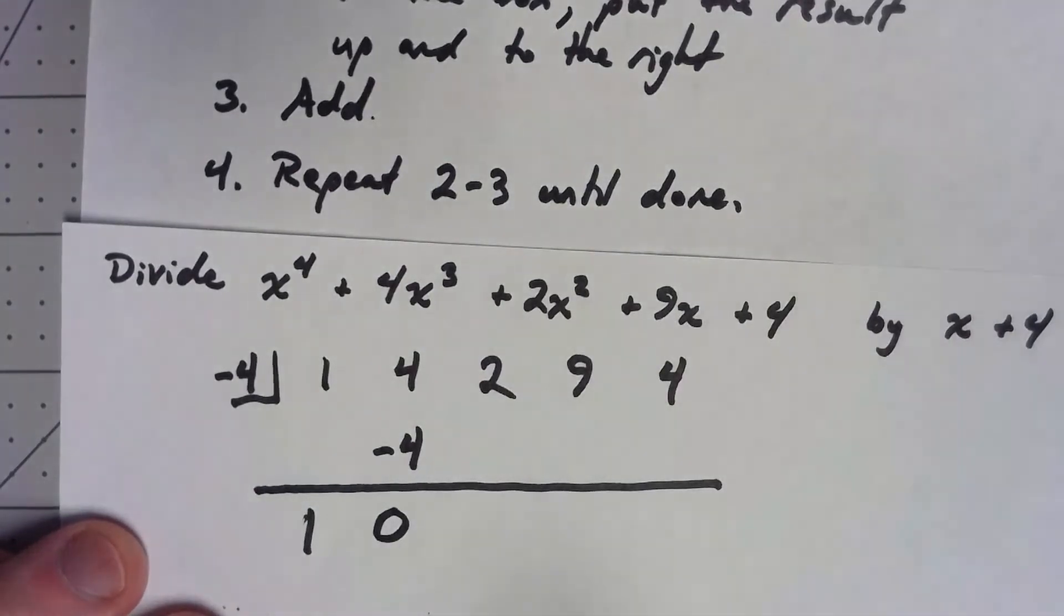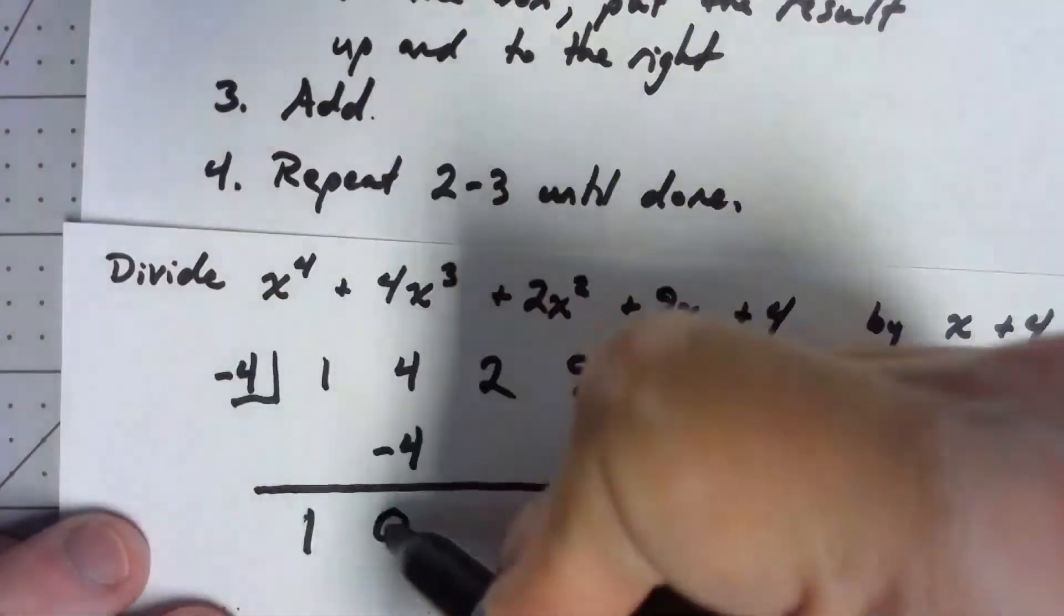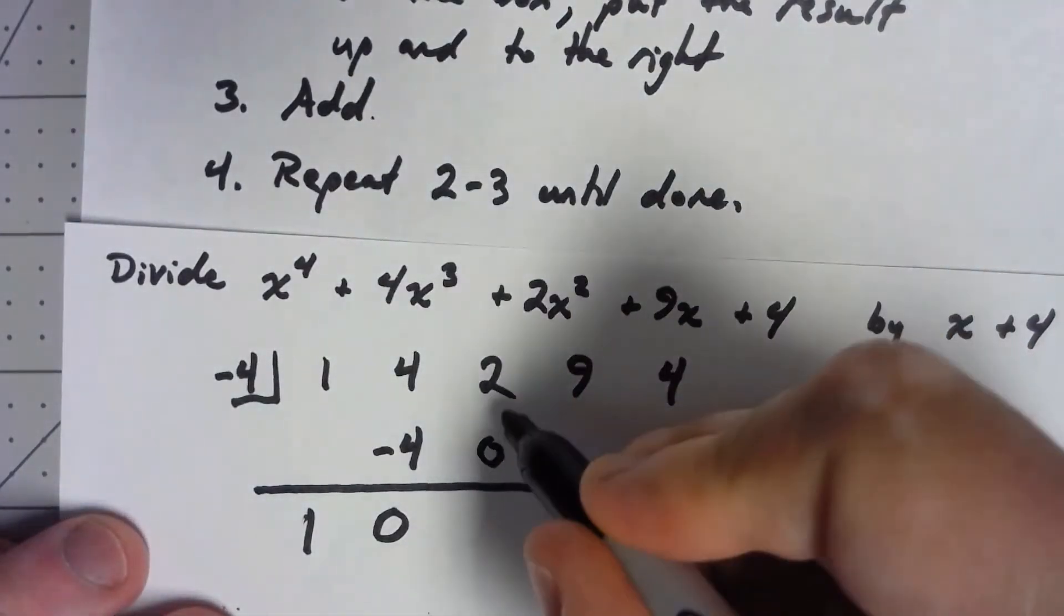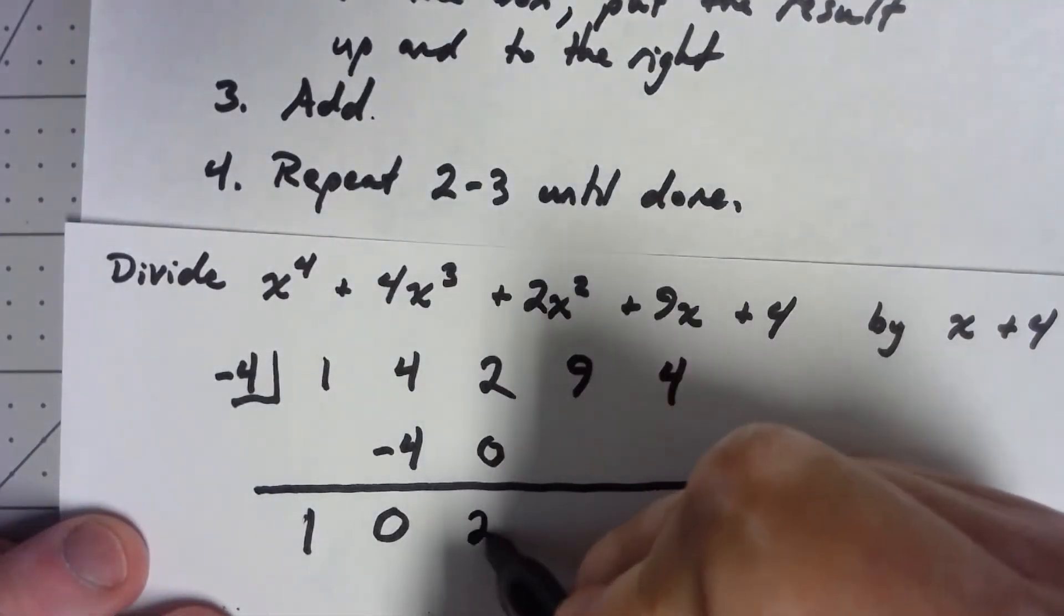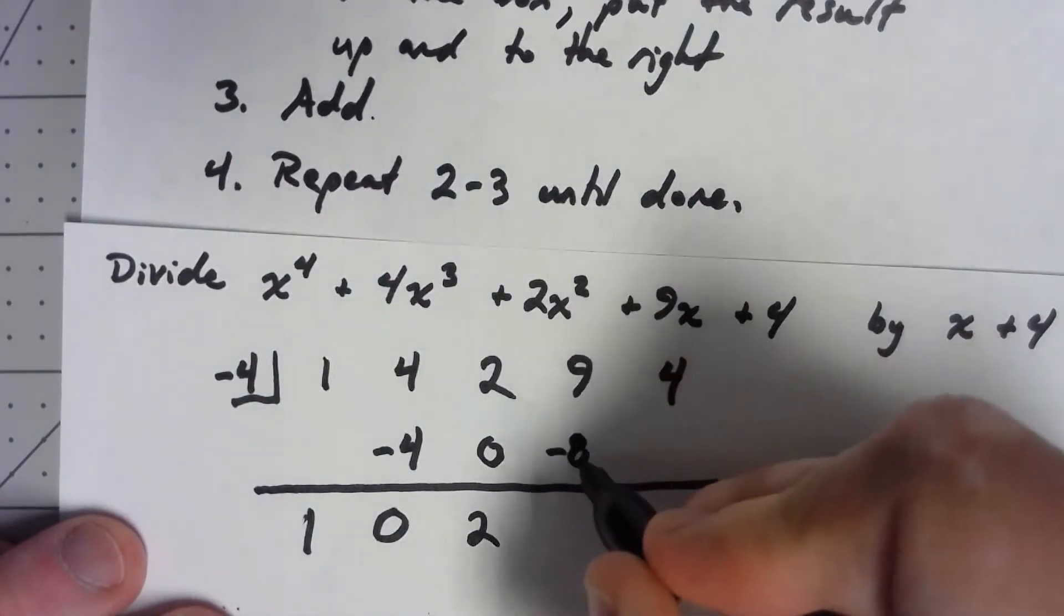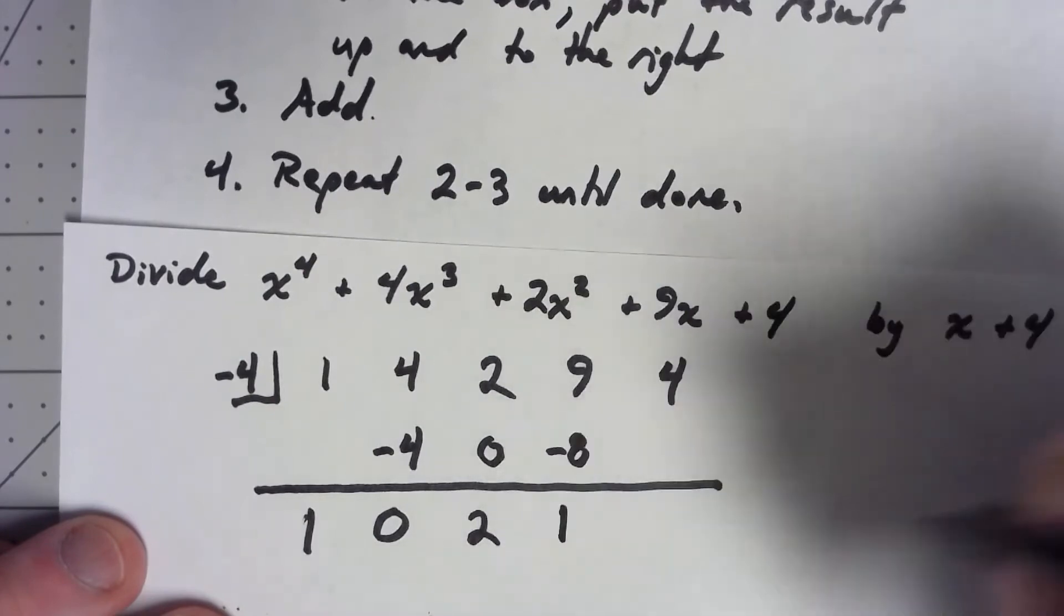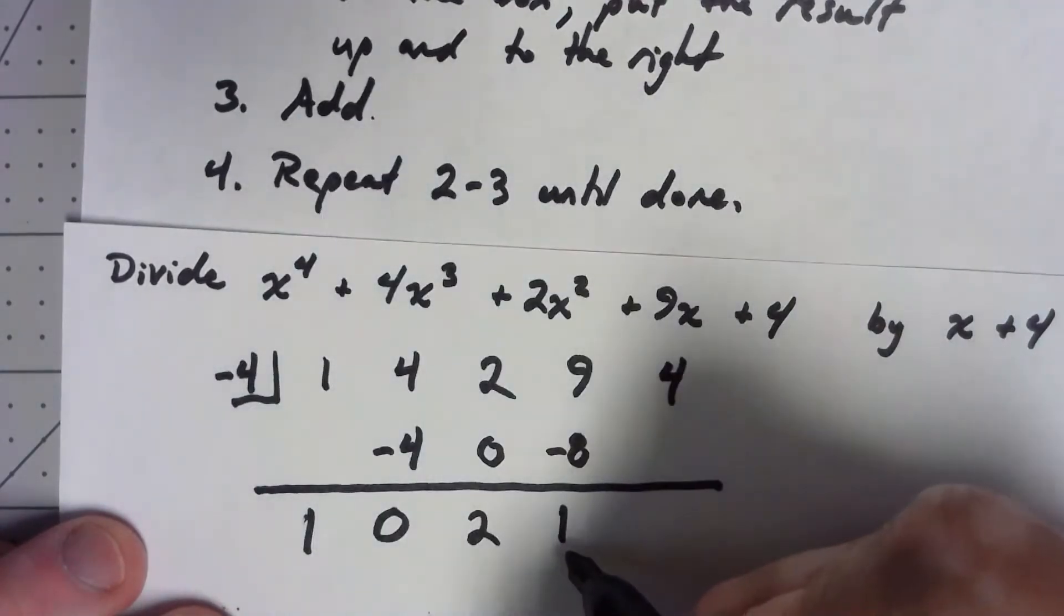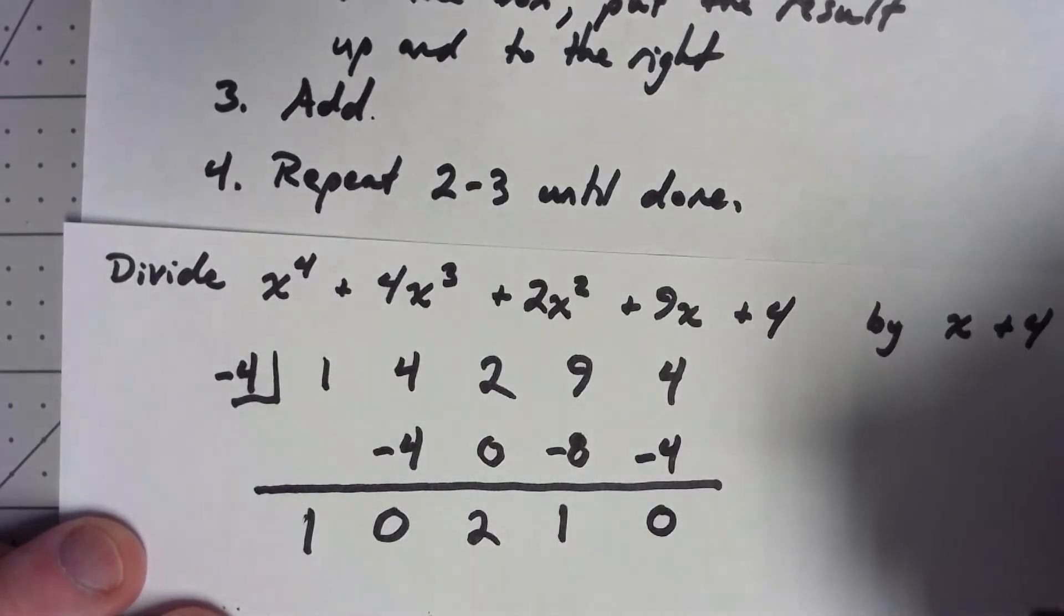Then all I do is in that column, I add negative 4 plus 4 gives me a 0. And now, just like when we were doing the long division with polynomials, we're going to go ahead and just keep repeating those steps over and over again until we run out of space. Negative 4 times 0 is 0, then I add 2 plus 0 is 2. Negative 4 times 2 is a negative 8. 9 plus a negative 8 gives me a 1. Negative 4 times 1 is negative 4. Add gives me a 0.